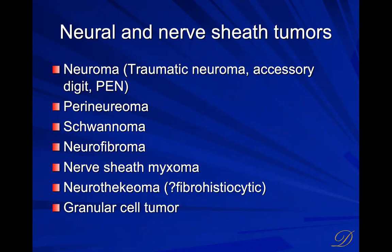A neuroma is more of a proliferation of maturely formed nerves, including traumatic neuromas of the digits, and palisade encapsulated neuroma. We're going to get perineuriomas, which are the cells surrounding the nerves; schwannomas, which are the nerve sheath; neurofibromas; and then the entity previously known as neurothekeoma and what's happened with that naming; followed by granular cell tumors.